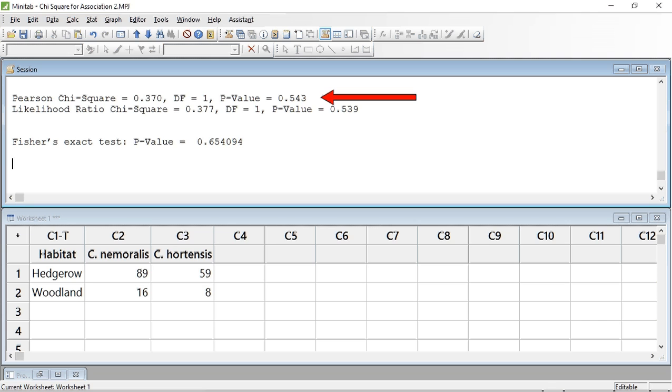So a p-value of 0.543 is above our transition probability of 0.05, meaning we cannot reject the null hypothesis, and that there is no difference in the distribution of snails between the two locations. We can also see further down, it's given us a p-value for the Fisher's exact test of 0.654094.